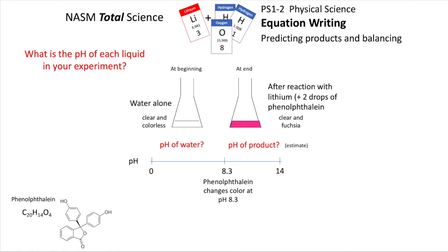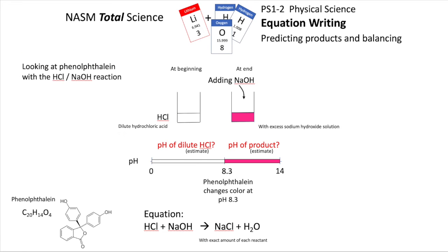For your experiment, what was the pH of the water and what is the pH of the product? Estimate it because we aren't measuring the amount of alkalinity. We did a further investigation where we started with hydrochloric acid and then added sodium hydroxide. What's the pH of your dilute HCl—again, an estimate—and what's the pH of your product after you've added sodium hydroxide in excess?